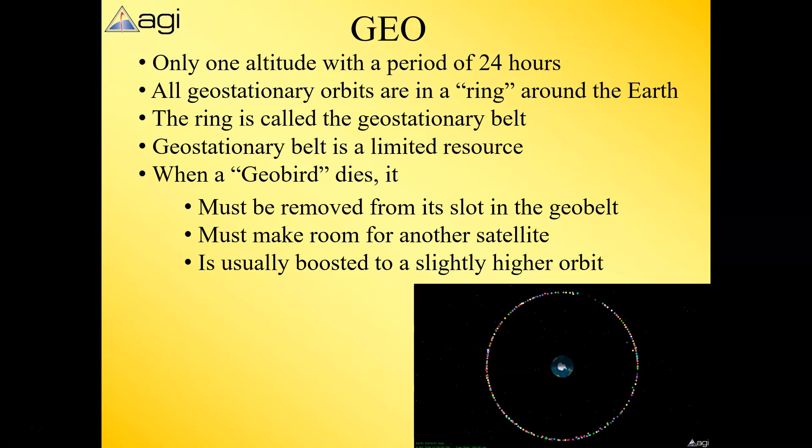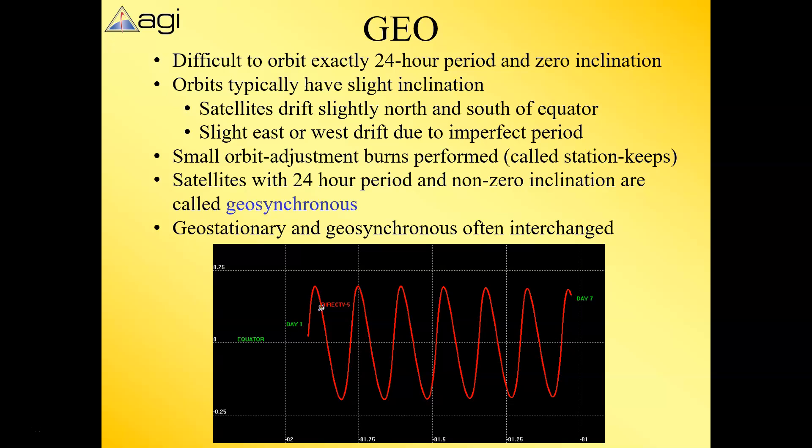When a geosynchronous satellite runs out of fuel, the owner knows how much fuel remains. When it gets low, the satellite is kicked out to a higher orbit a couple hundred kilometers away — essentially becoming part of a satellite graveyard.